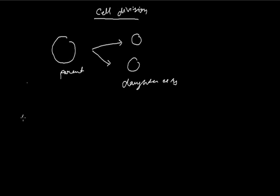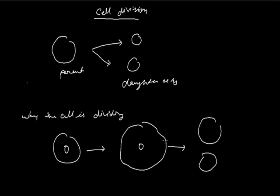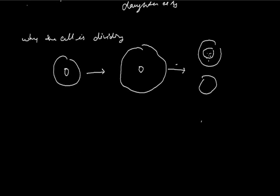Why is the cell dividing? Cell is dividing because the nucleus controls all the vital activities. When the cell grows in size, the volume of the cytoplasm increases and the control of the nucleus on the cytoplasm becomes less. So, the cell will divide and produce daughter cells, which are comparatively small compared to the parent cell. Now the nucleus can control all the vital activities of the cell.